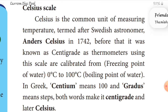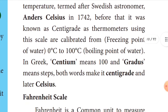Thermometers using the Celsius scale are calibrated from the freezing point of water, which is 0 degrees Celsius, to the boiling point of water, which is 100 degrees Celsius. In Greek, 'centum' means hundred and 'gradus' means steps — together making 'centigrade,' which was later renamed Celsius.